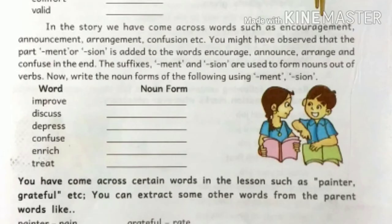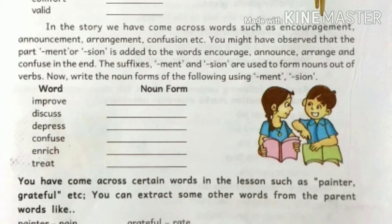In the story, we have come across words such as encouragement, announcement, arrangement, confusion, etc. You might have observed that the part -ment or -tion is added to the words encourage, announce, arrange, and confuse at the end. The suffixes -ment and -tion are used to form nouns out of verbs.